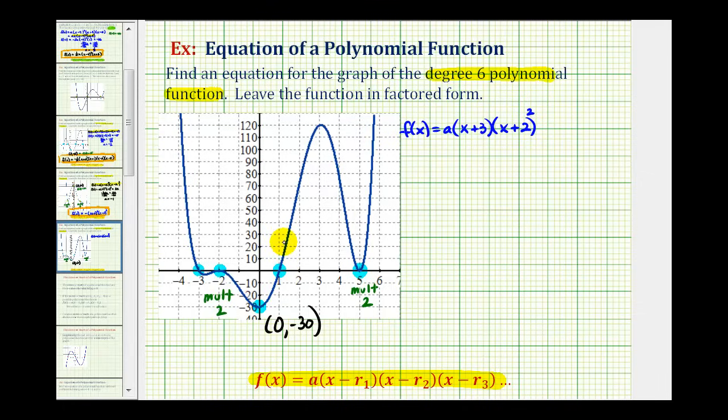Next, we have a zero of one, so we have a factor of x - 1. And our last zero was x = 5, so we have a factor of x - 5. But again, this has multiplicity two, so we have (x - 5)².